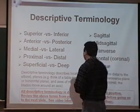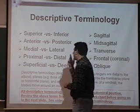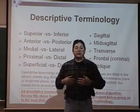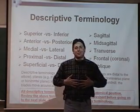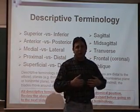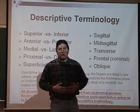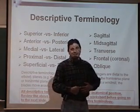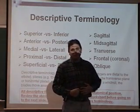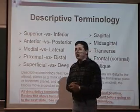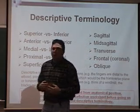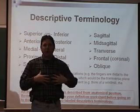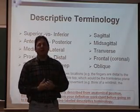Superficial versus deep. Superficial is toward the surface. Deep is inside. So my skin on my stomach is superficial to the stomach itself. Or, you could say my heart is deep to my ribs — it lies beneath the ribs.